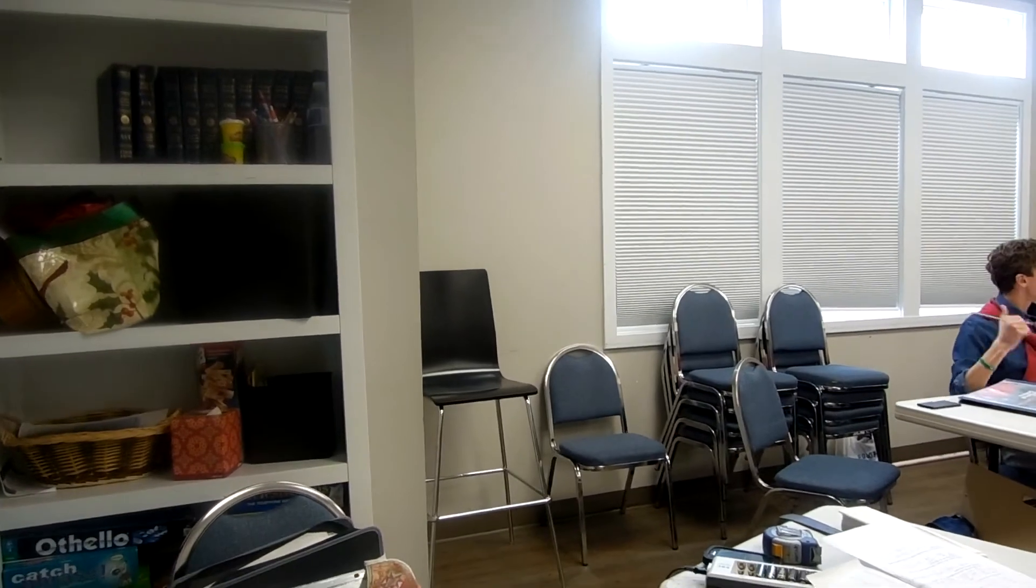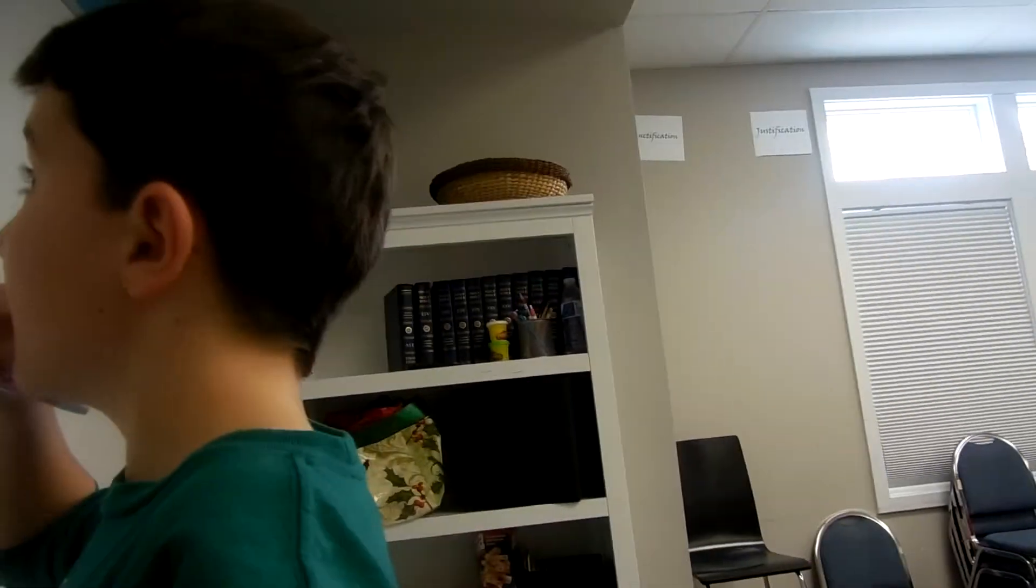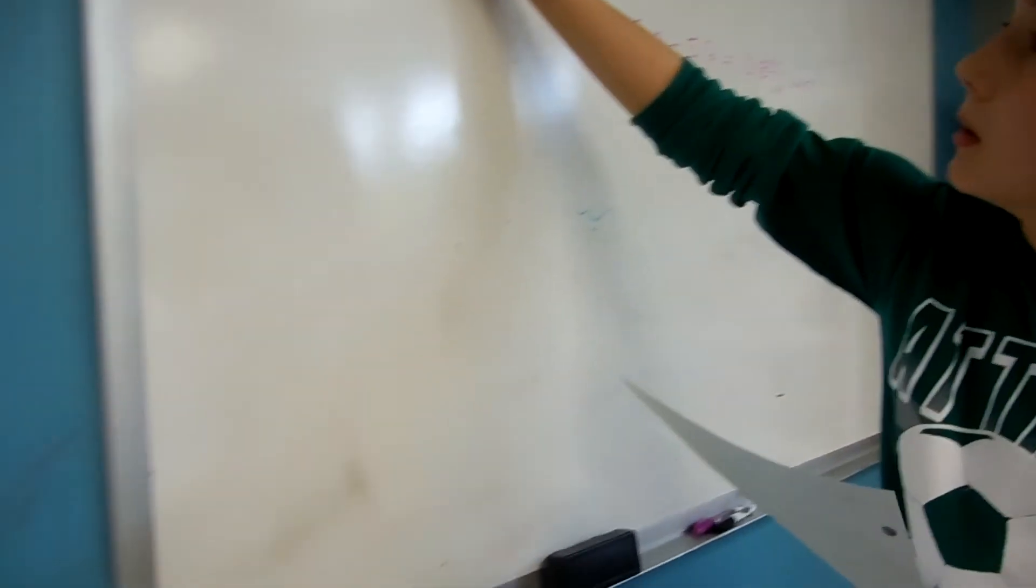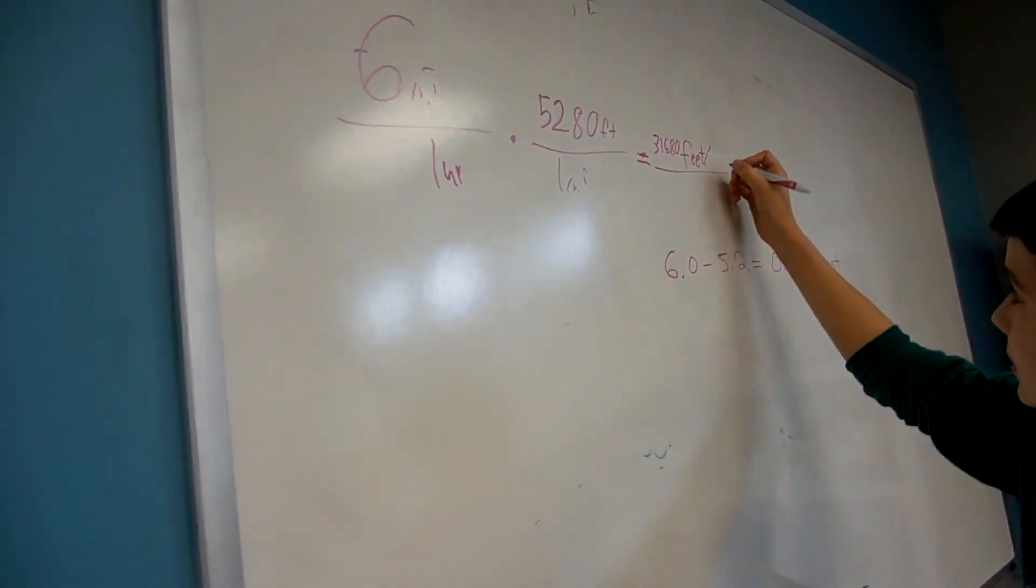So, you cancel miles with miles. So, now you've got feet in the numerator. And this hour is really in the denominator. So, I'm going to make you write it in the denominator because it just makes it easier for people to see. Okay, so miles are canceled. Now, we're just at feet per hour.